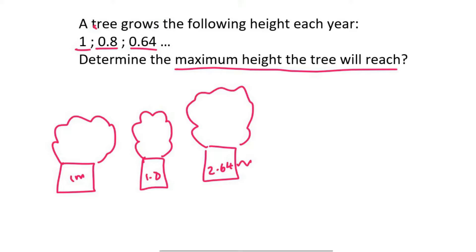Because what we should realize is that this is a geometric pattern, and the numbers are getting smaller. This means that they will eventually approach 0. That is a converging geometric pattern. So all we need to do is use the sum to infinity formula, which is a over 1 minus r.